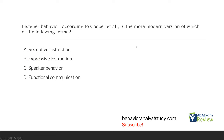Listener behavior, according to Cooper et al., is the more modern version of which of the following terms? When you tell somebody to do something, you are the speaker; when they do it, they are the listener. Answer A: receptive instruction — a lot of times we refer to programs as receptive instruction, teaching listeners to follow commands and directions. Answer B: expressive instruction — that's telling somebody something. Answer C: speaker behavior — using your voice to tell somebody something. Answer D: functional communication — it isn't functional communication; it's simply following receptive instructions. Listener behavior is following what you're told, so the more modern version is A, receptive instruction.